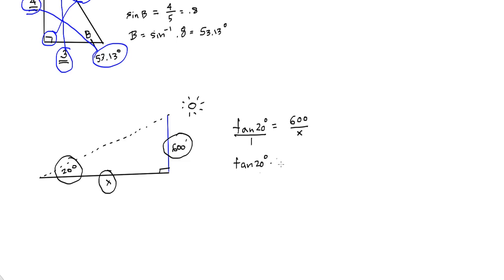So we get the tangent of 20 degrees times x equals 600 times 1, 600. Divide both sides by the tan of 20. You'd get 600 over the tan of 20 degrees. If you do that on your calculator, you should get an answer of about 1648.49 feet. About 1648.5 feet.